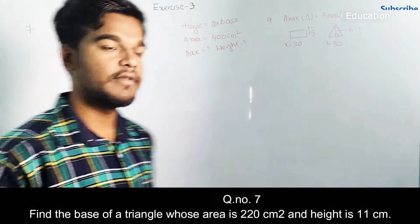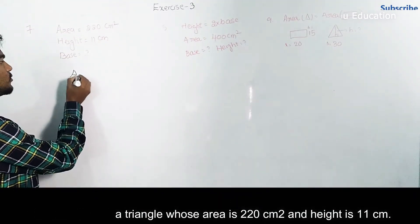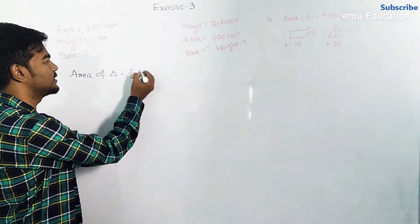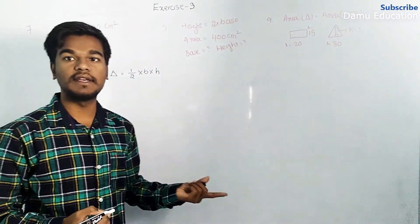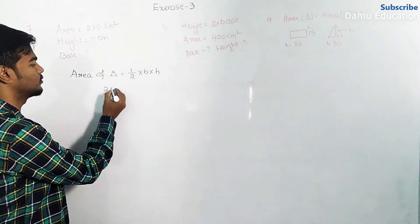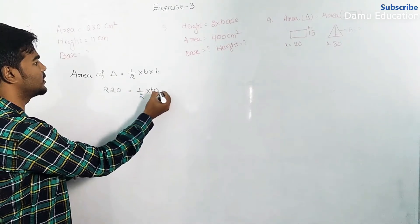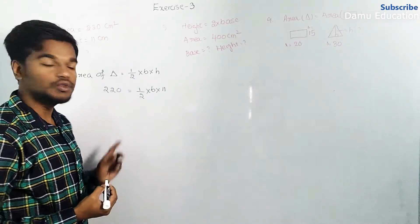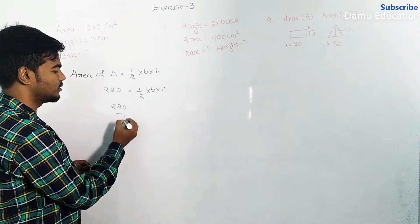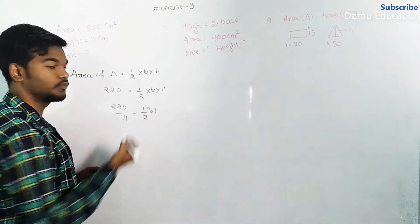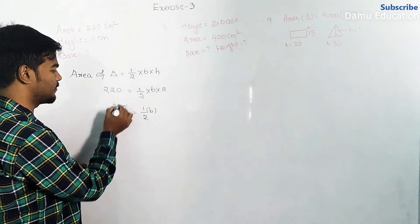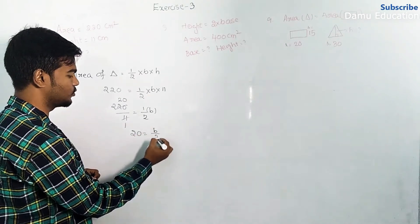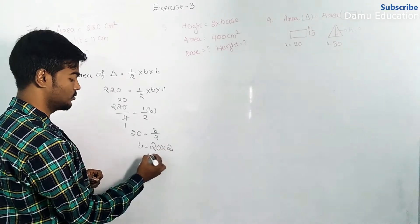The area of triangle is equal to half into base into height. The area given is 220, so: 220 equals half into B into 11. Shifting 11 to the other side: 220 divided by 11 equals one-half into base, which gives 20 equals B divided by 2.